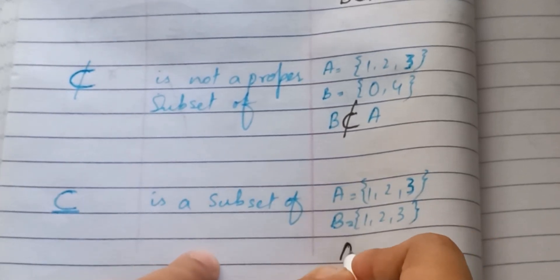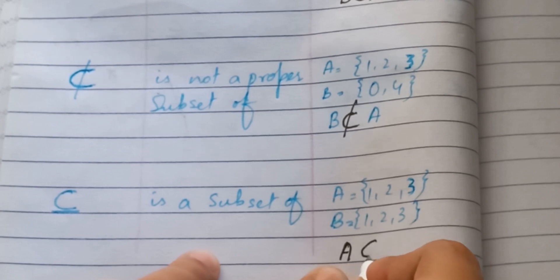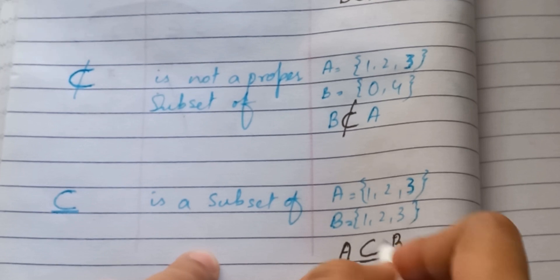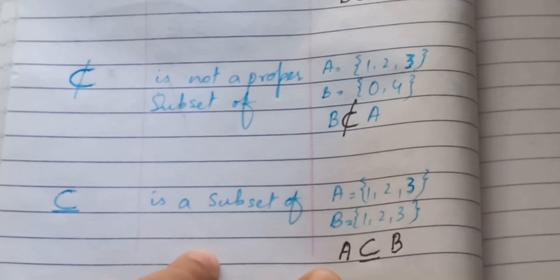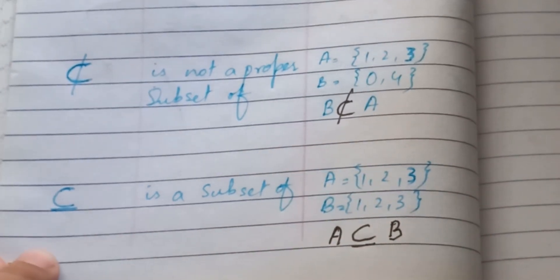The last symbol is 'is a subset of' (⊆). Here, A = {1, 2, 3} and B = {1, 2, 3}. Since A is completely contained within B with equal values, we put the subset sign: A is a subset of B.